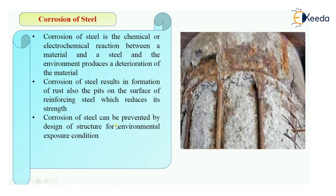So how can it be prevented or avoided? You have to design your structure for various environmental exposure conditions. The structure or concrete member should be designed as per the various exposure conditions given in IS 456-2000, so that there is no corrosion or there are less chances of corrosion.